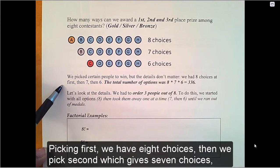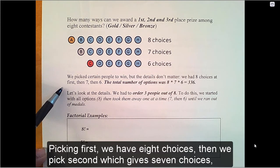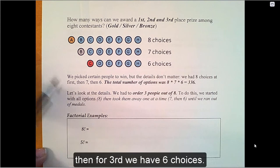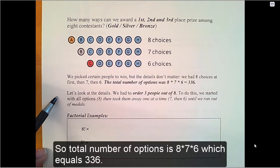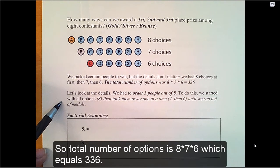Picking first, we have eight choices. Then picking second, which gives us seven choices. Then third, we have six choices. So the total number of options is eight times seven times six, which equals 336.